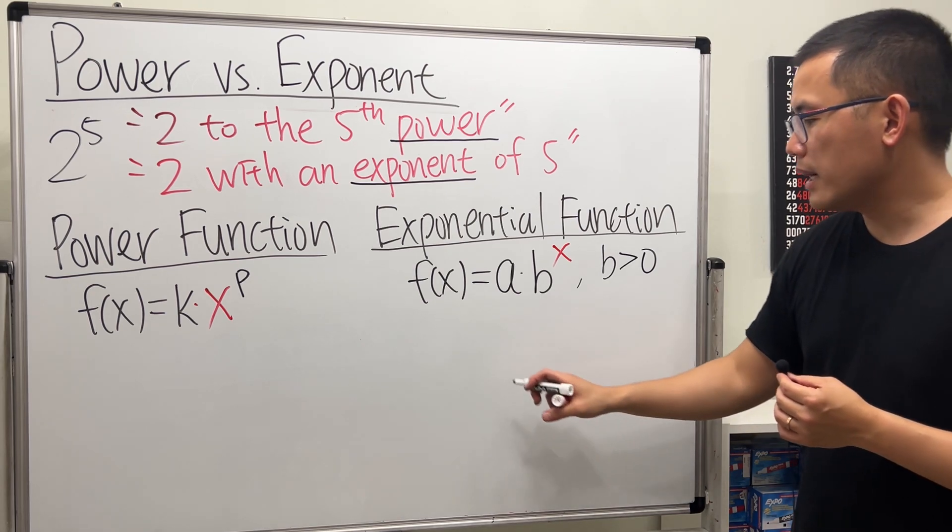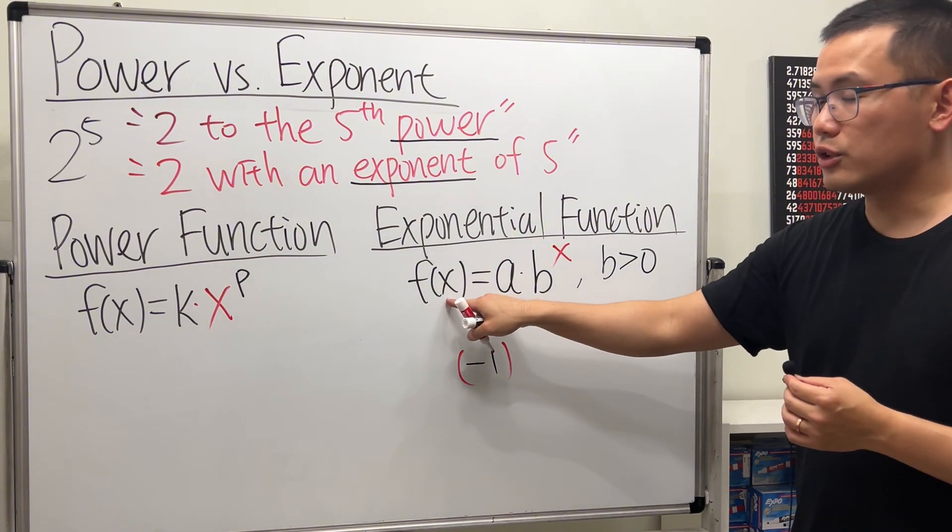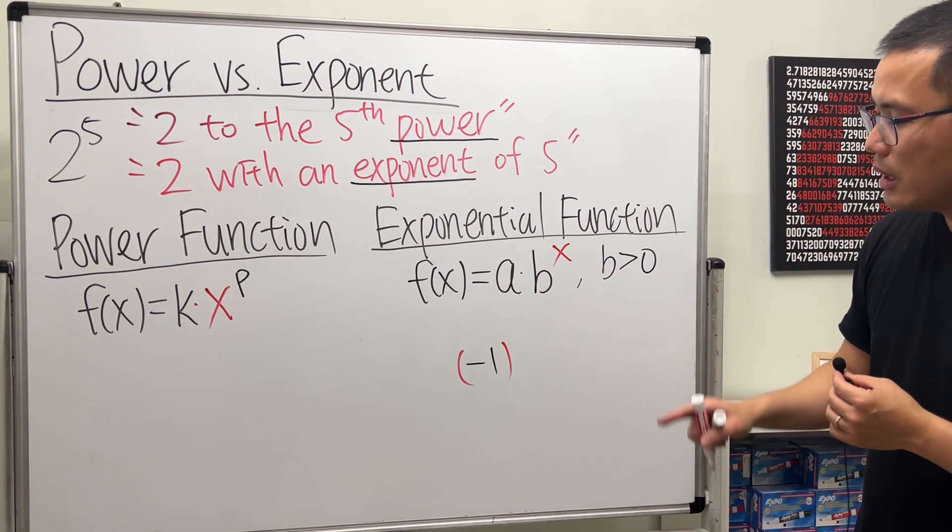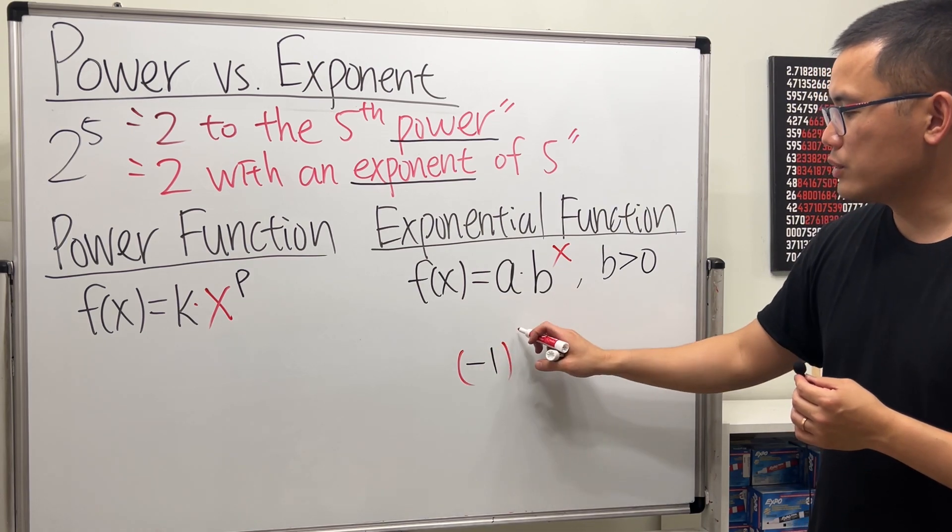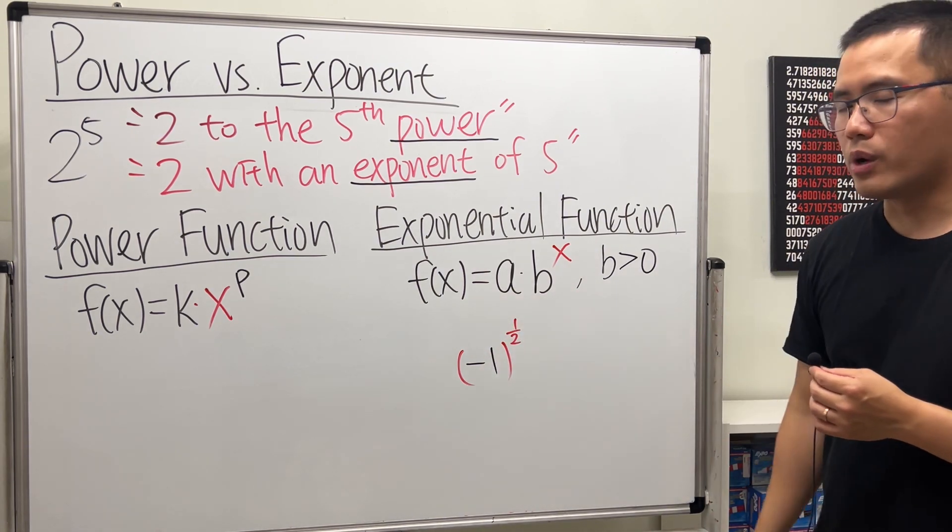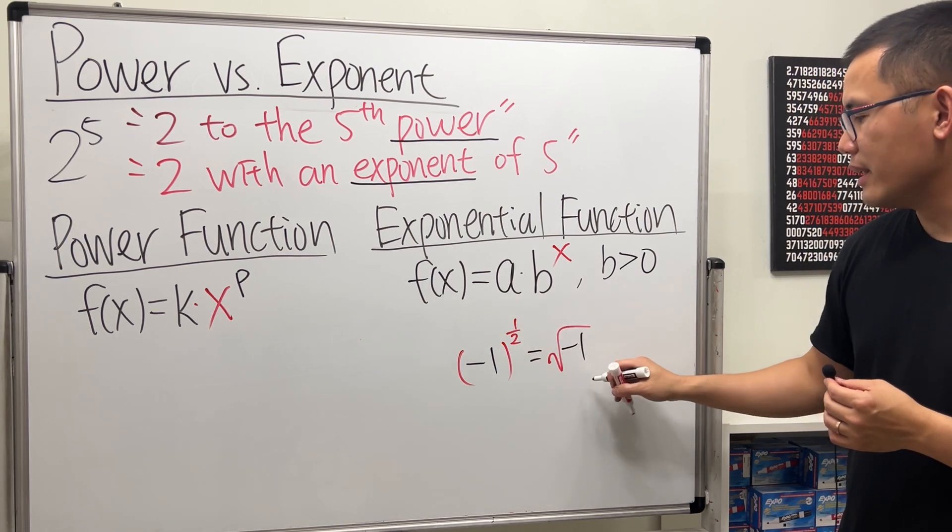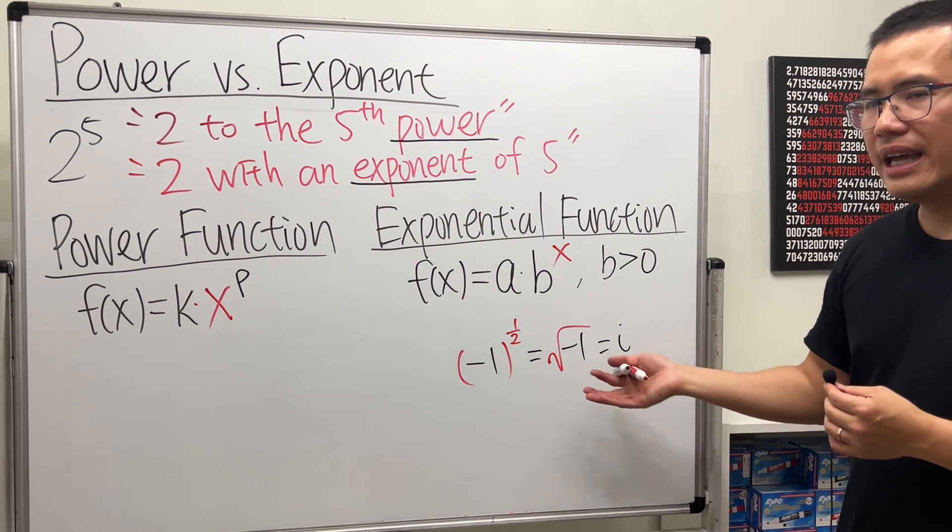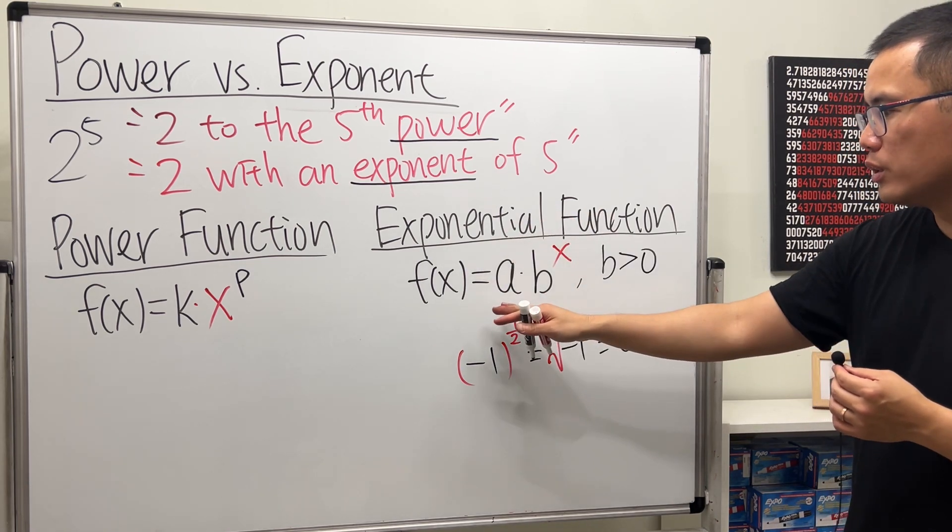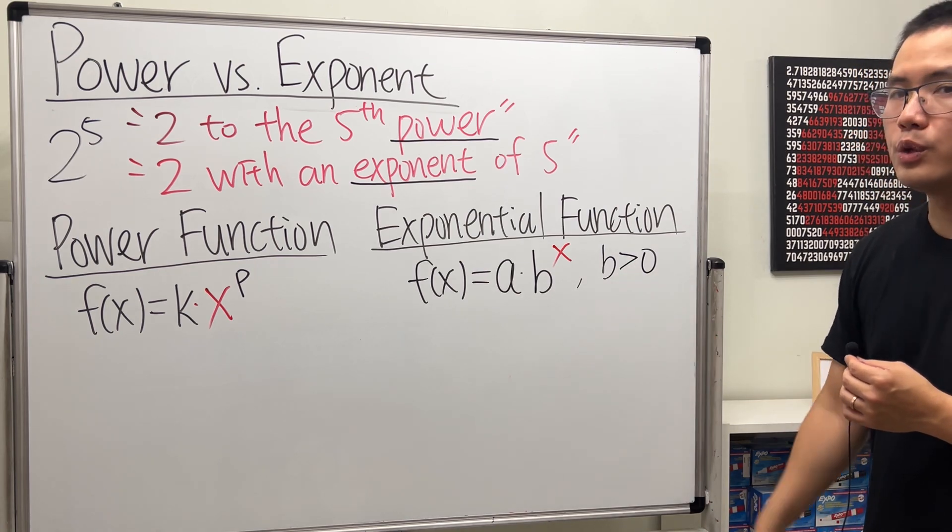Because otherwise, let's say if you have negative 1, x can be anything. That's the domain for an exponential function. But if b is less than 0, let's say negative 1 raised to some fractional power like 1 half. This will give us square root of negative 1, which will be the imaginary number i. And if you are talking about functions in the real world, we don't want this to happen. So that's why we want b to be greater than 0.